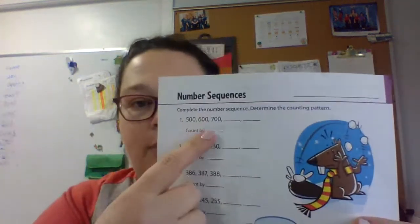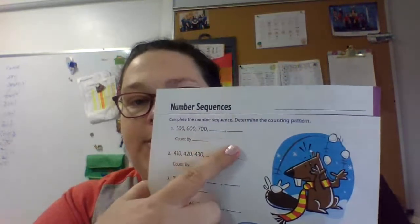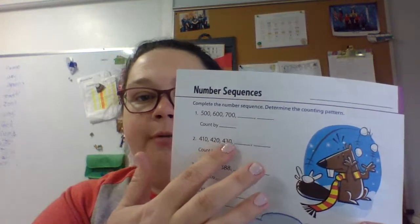So this week we're talking about number sequences. Not too hard. It's when you have counting by 100s, 500, 600, 700, so on and so on by 100s. Then this one right here, 410, 420, 430.